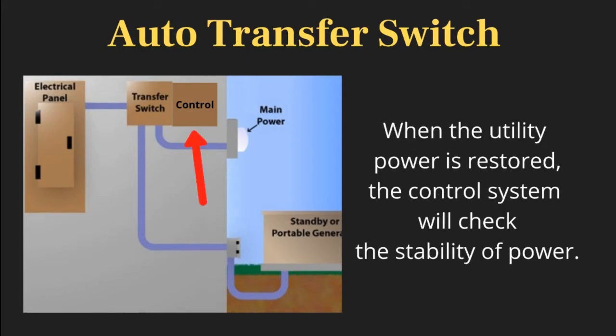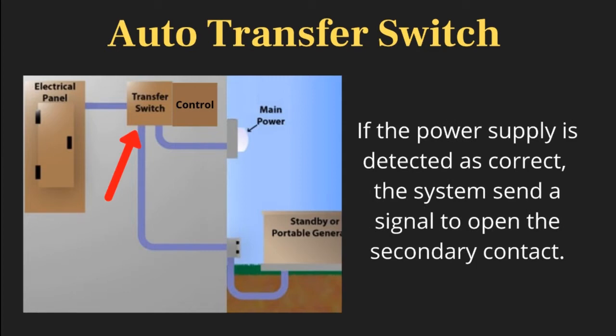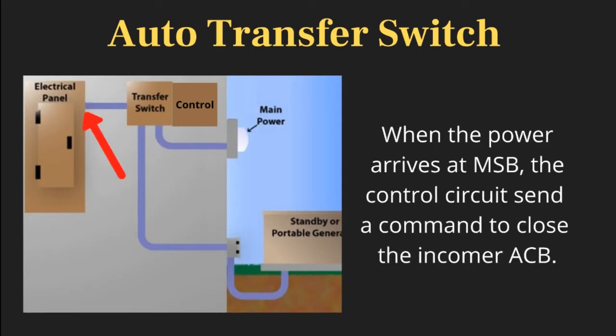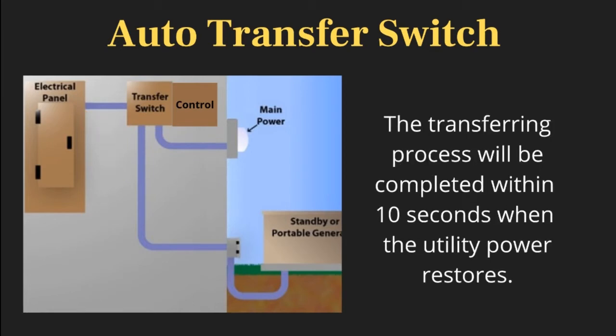When the utility power is restored, the control system will check the stability of power. If the power supply is detected as correct, the system sends a signal to open the secondary contact, stop the generator, and close the main breaker of the ATS to deliver power to the MSB. When the power arrives at the MSB, the control circuit sends a command to close the incoming ACB. The transferring process will be completed within 10 seconds when the utility power restores.